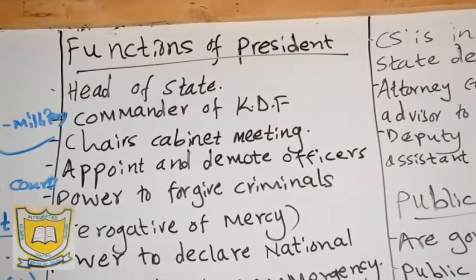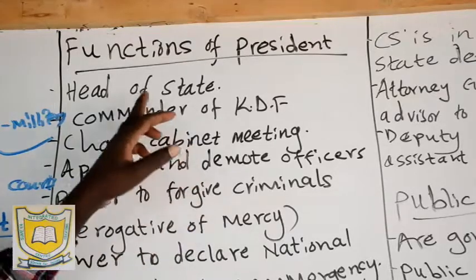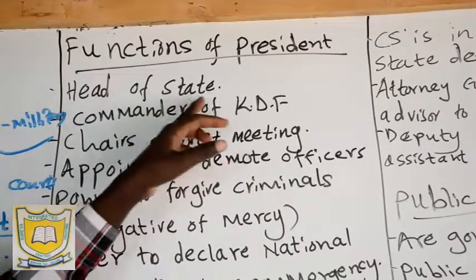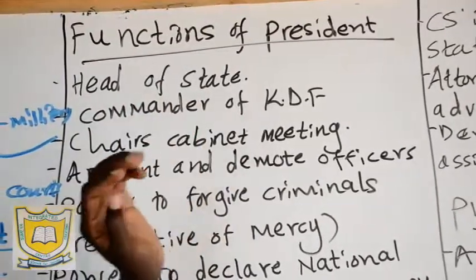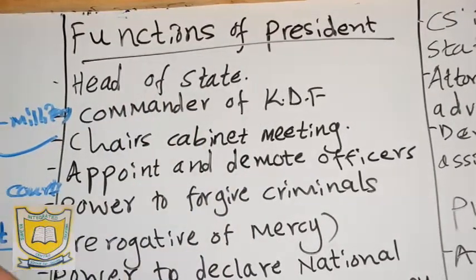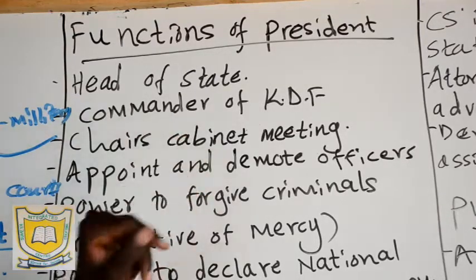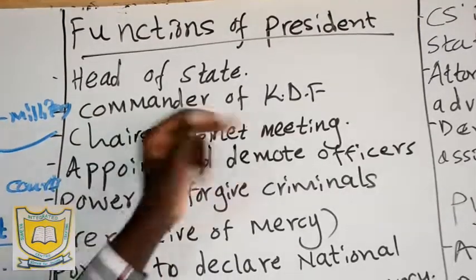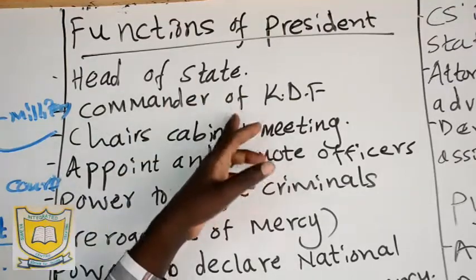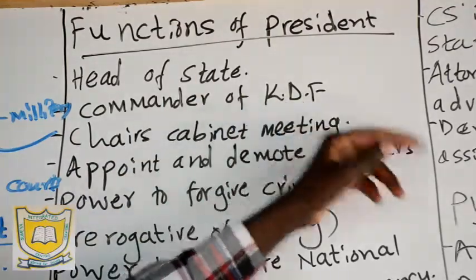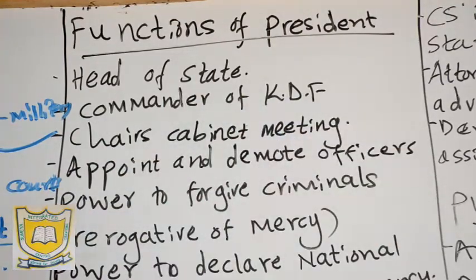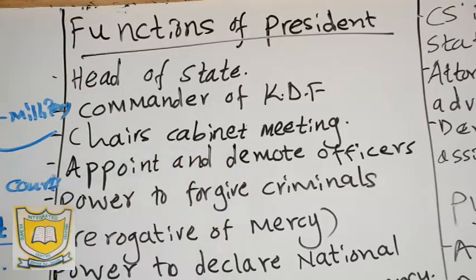The president of the Republic of Kenya is the head of state and head of government in Kenya. He is the head of the country — that's what we mean by head of state. Then he is the commander-in-chief of the armed forces. We call it the Kenya Defense Forces or KDF. He is the one to command the Kenya armed forces.